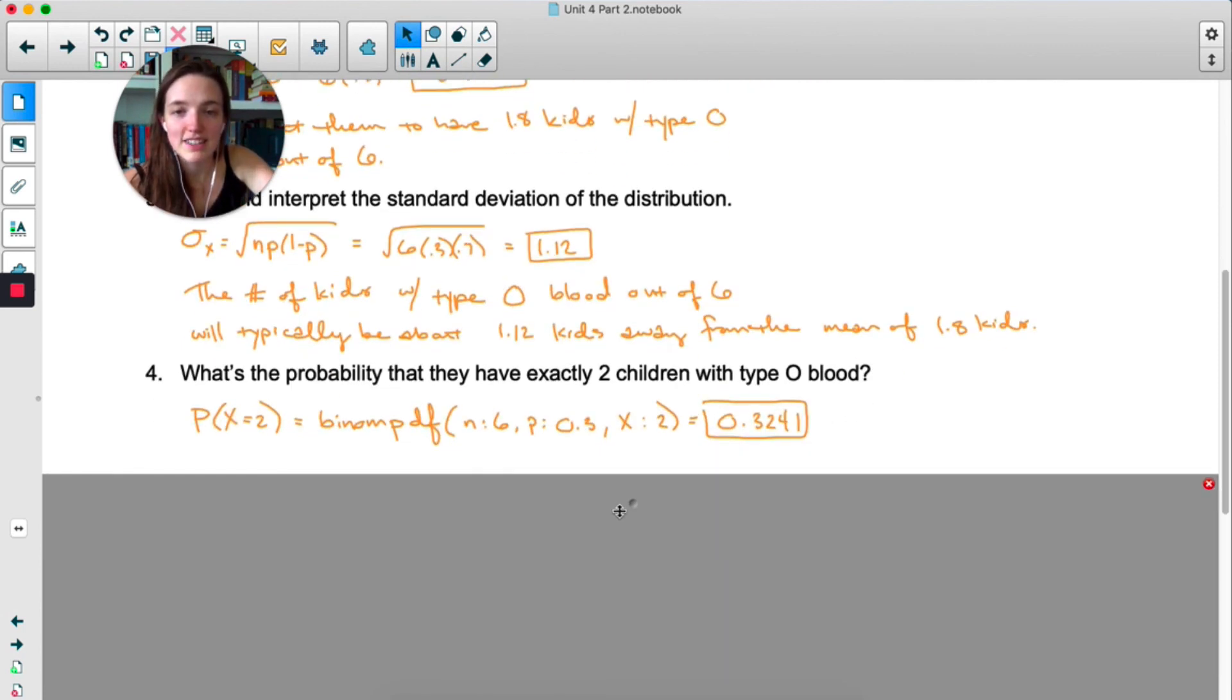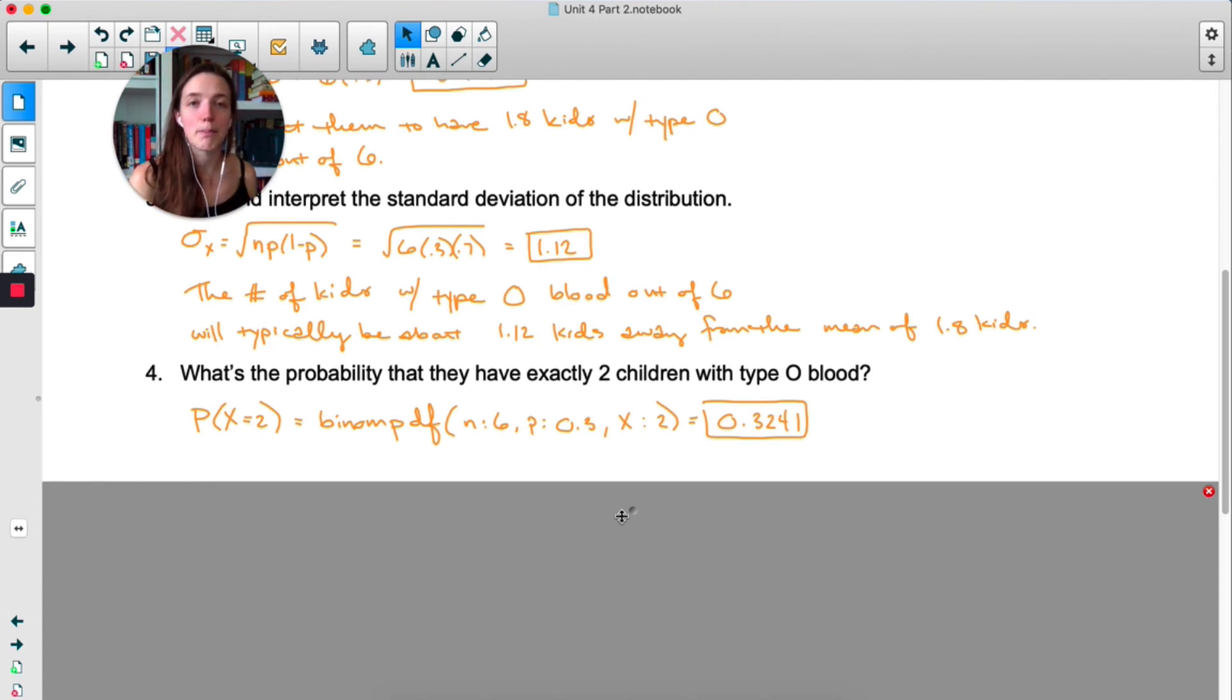The probability that they will have exactly two children. I'm using binom pdf 6.3 and 2. Notice that I've written out everything I typed into my calculator so that you know what I was thinking.